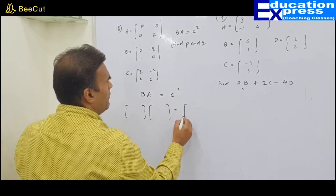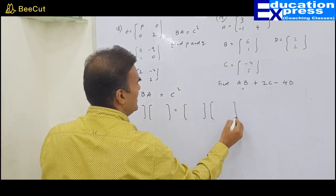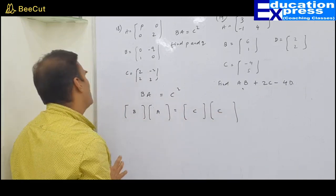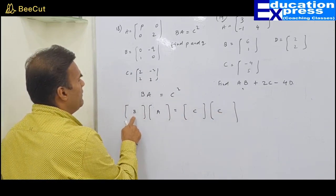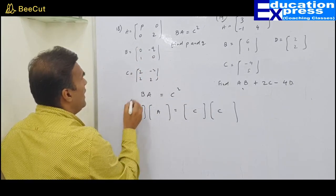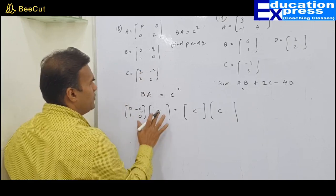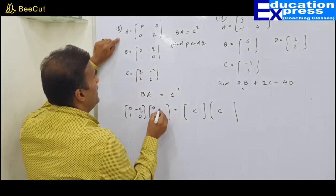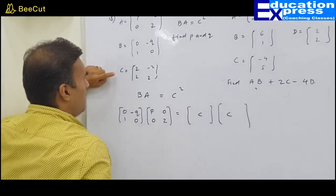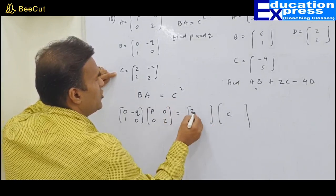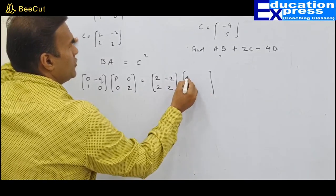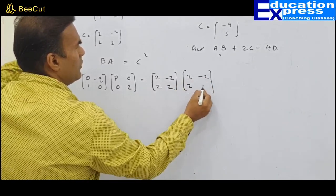Can you find matrix BA? We can multiply. And C squared is matrix C into C. So BA and C into C gives C squared. I need to find the value of matrix B, that would be 0, minus Q, 1 and 0. What about matrix A? P, 0, 0 and 2. What about matrix C? Matrix C would be 2, minus 2, 2 and 2. Here also 2, minus 2, 2 and 2.